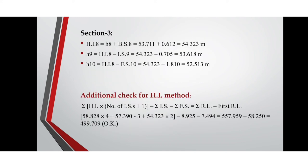Proceeding to section 3: the height of instrument is calculated by adding the elevation plus the back sight — h8 plus back sight 8 — which equals 54.323 meters. For calculating h9, we subtract the intermediate sight from the height of instrument, giving 53.618 meters. For calculating h10, we subtract foresight 10 from the height of instrument, giving 52.513 meters.